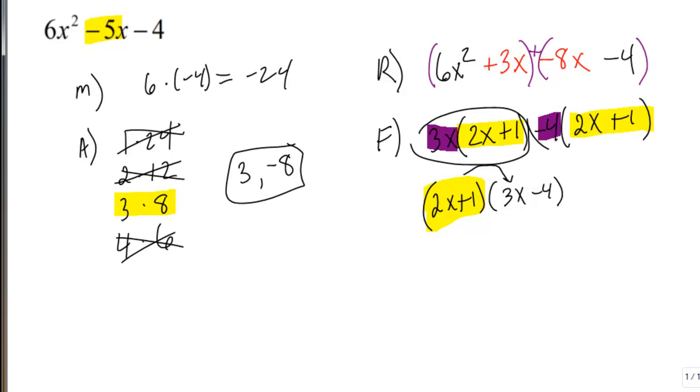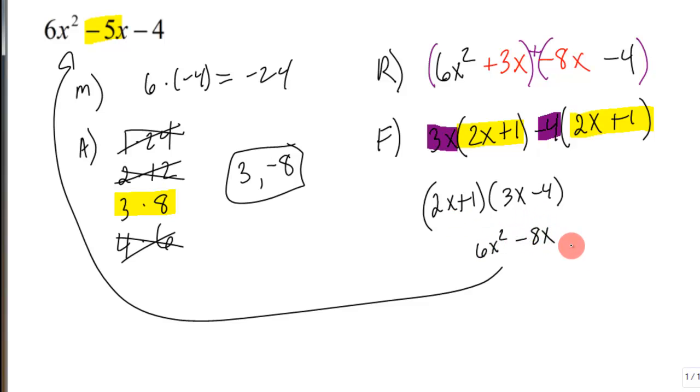Now that's just going in reverse. But remember this thing can be foiled out. This is the answer here, and it can be foiled out and be shown that it is this back here. If you just take 2x times 3x, you get 6x squared. 2x times minus 4, minus 8x.